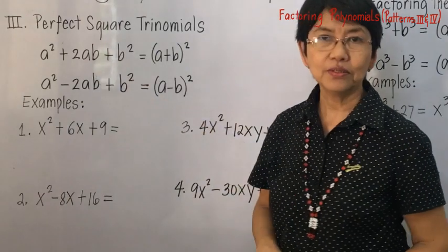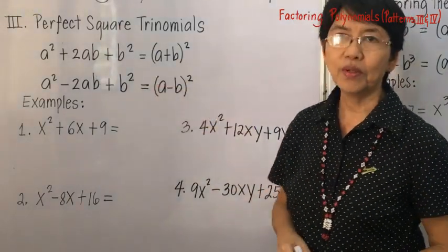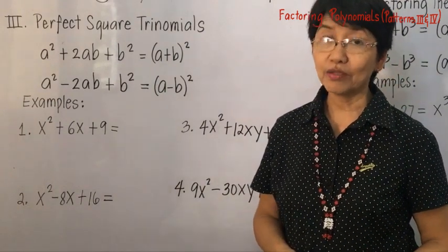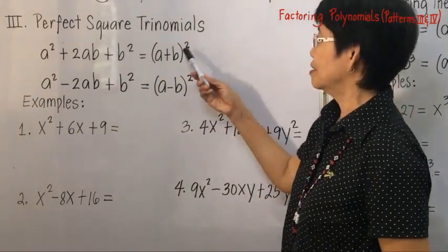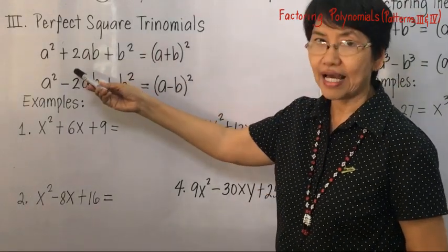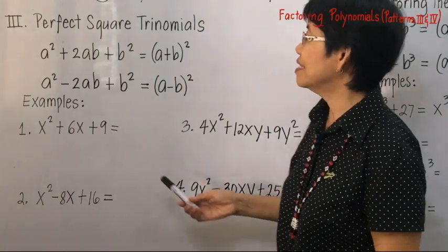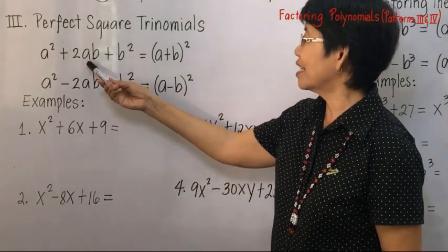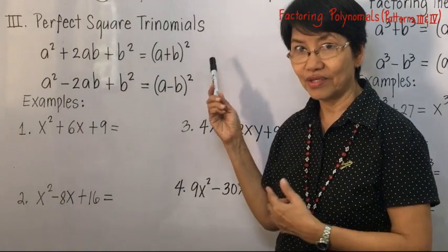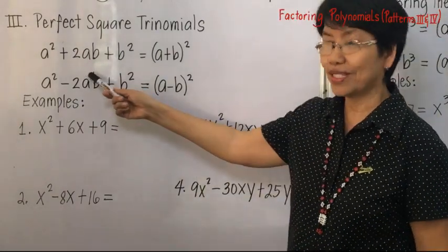To factor a perfect square trinomial, we have this pattern: a squared plus 2ab plus b squared is equal to a plus b, quantity squared. Remember the special product where you have the square of a binomial and get this result. Now we will just reverse the order — we get the product and the answer is the factors.